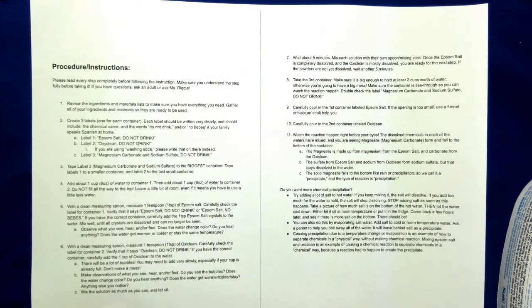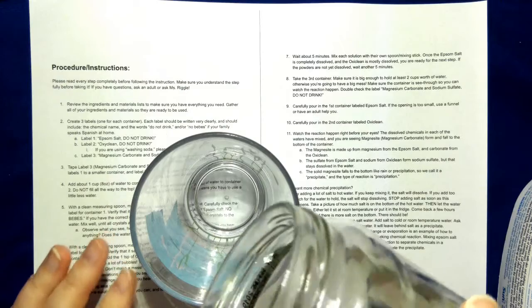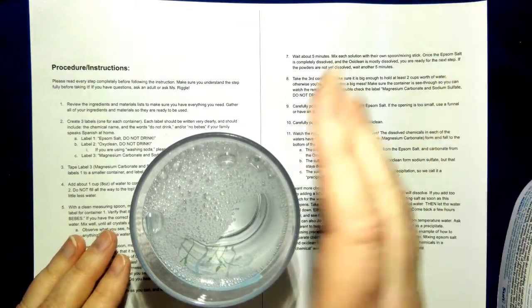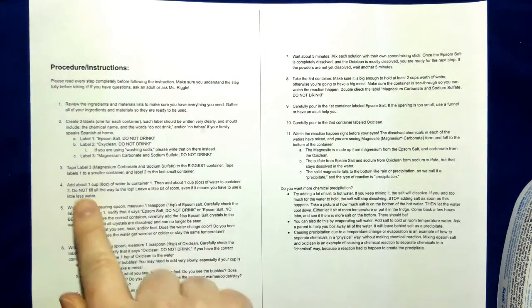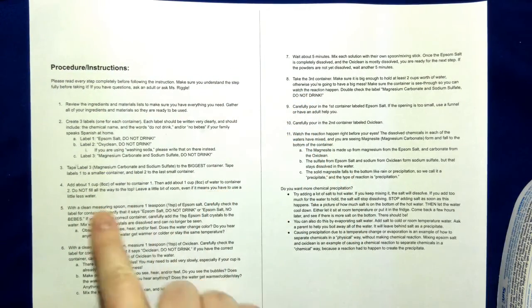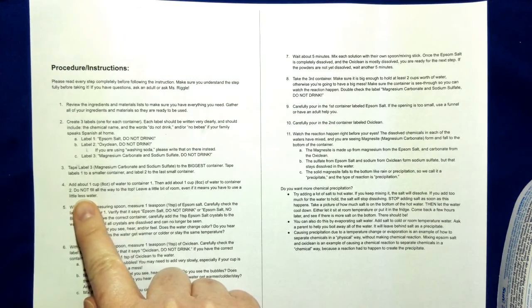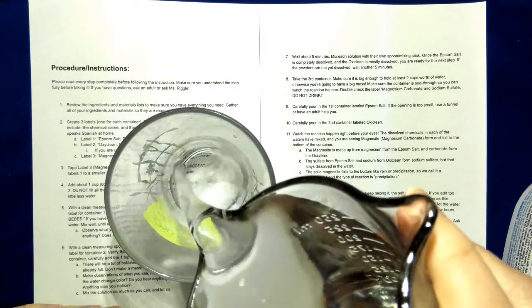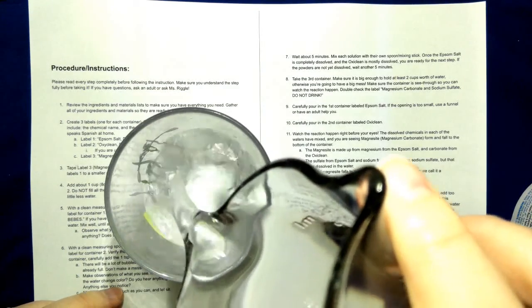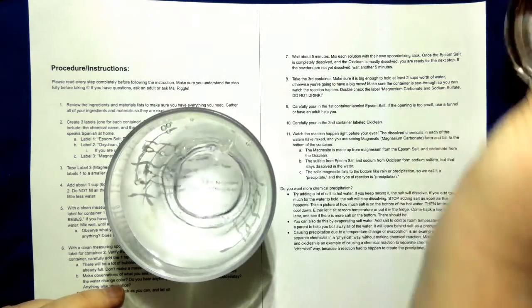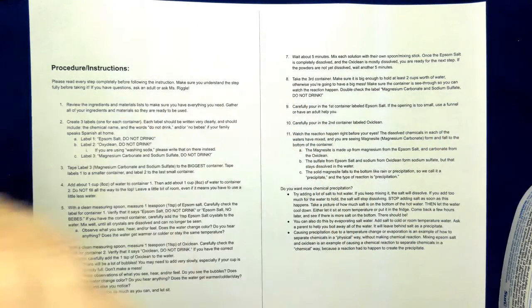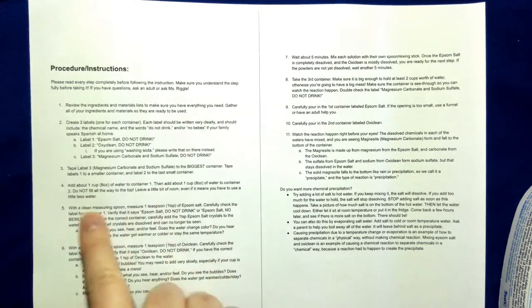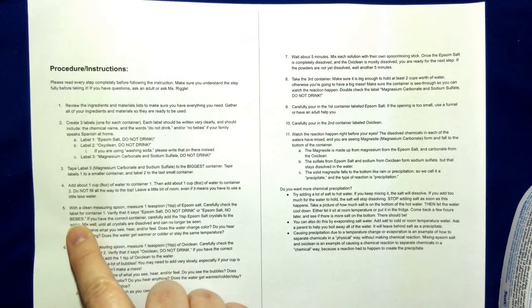Step four. Add about one cup or eight ounces of water to container one. This is just plain water. I promise. Just good old tap water. Good for the soul. Then add about one cup to container two. Container two. I'm going to add about a cup worth of water. These are juice glasses. They only hold about eight cups to begin with. So as long as I don't fill them all the way to the top, I'm good. Leave a bit of room, even if it means you have to use a little less water.